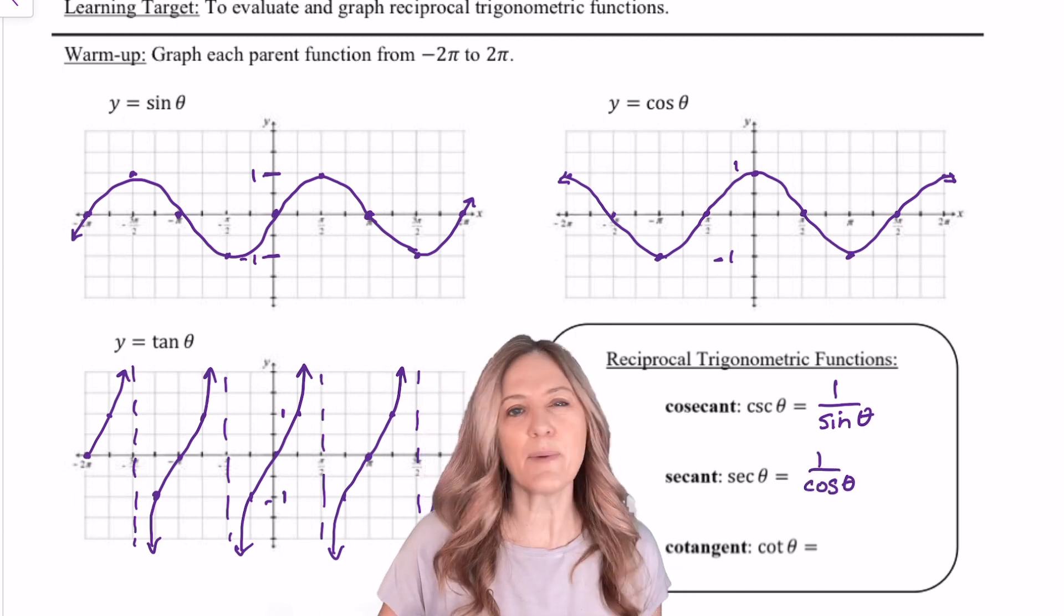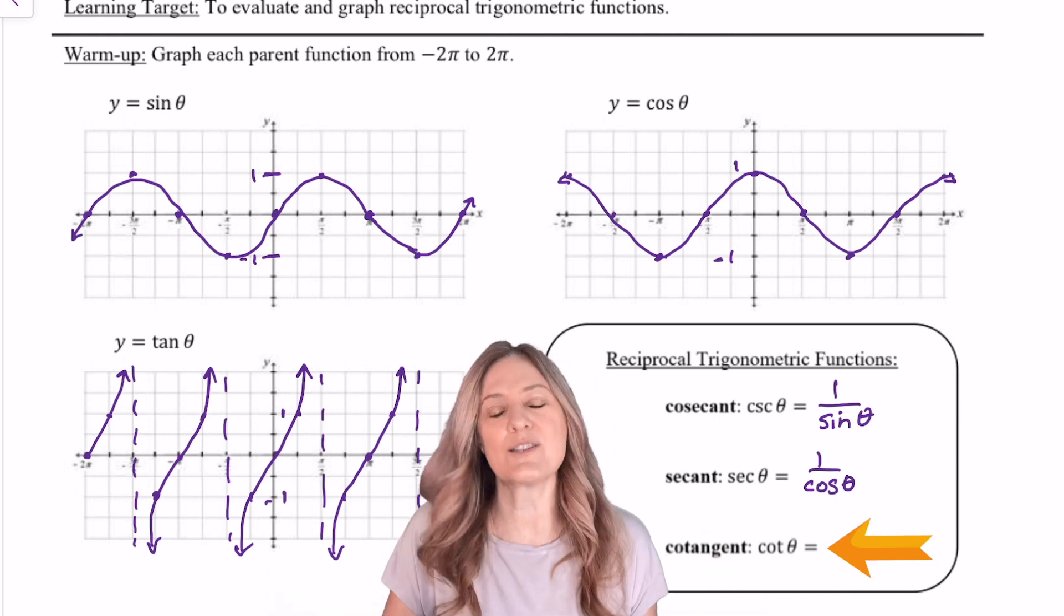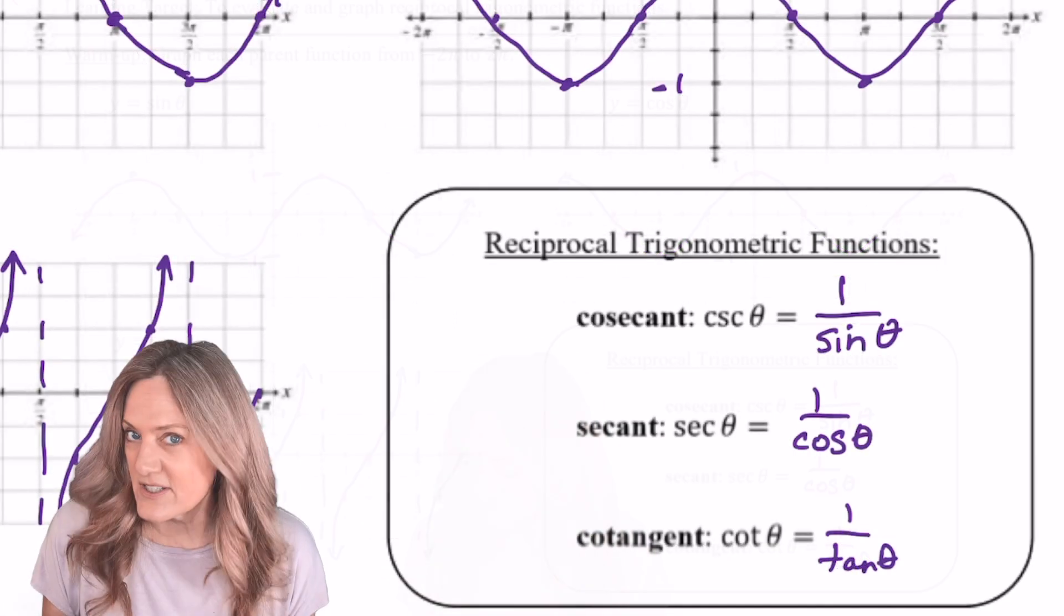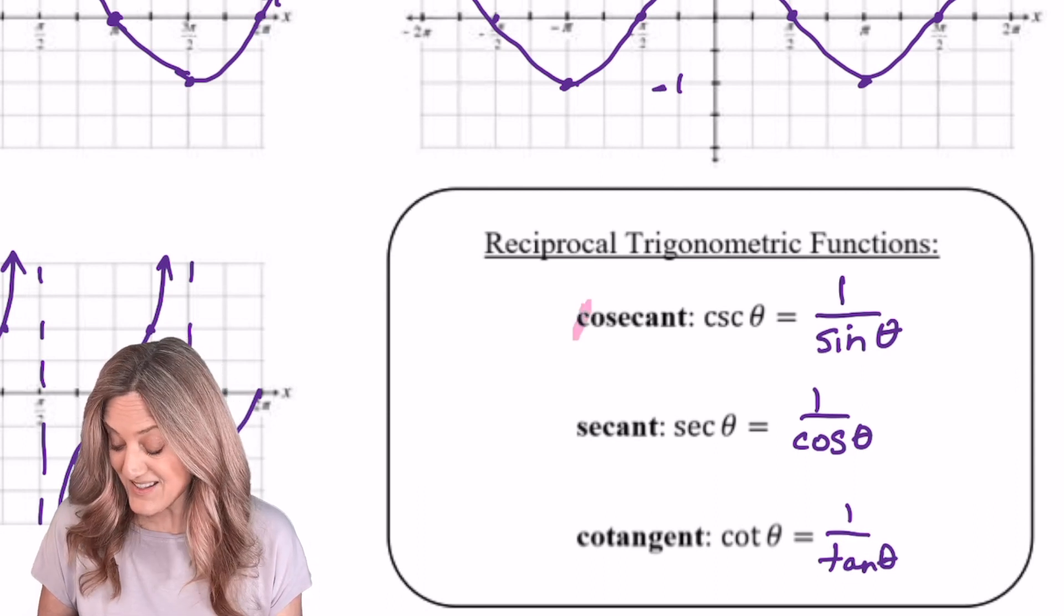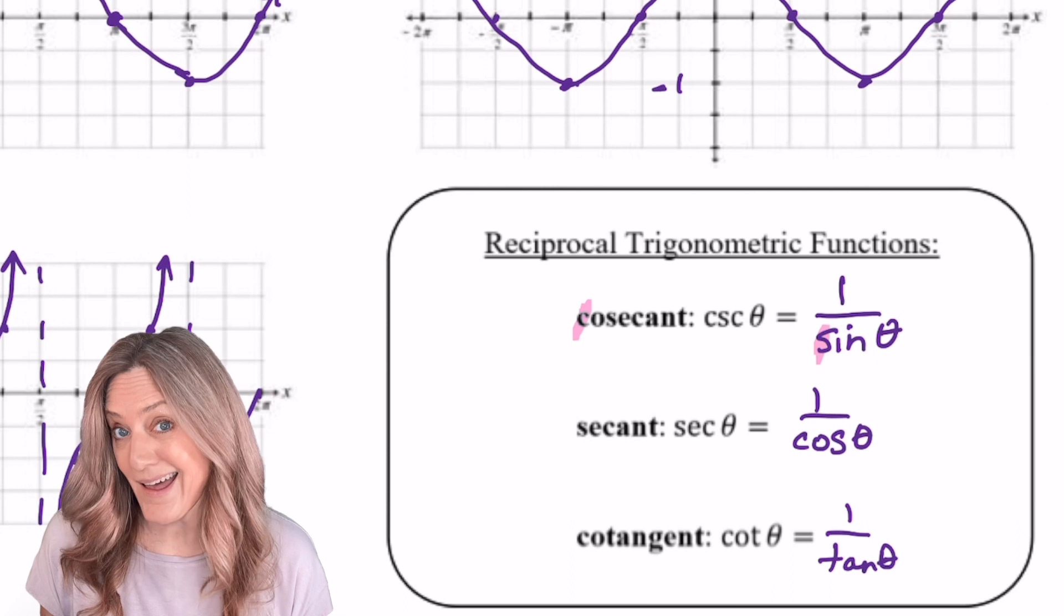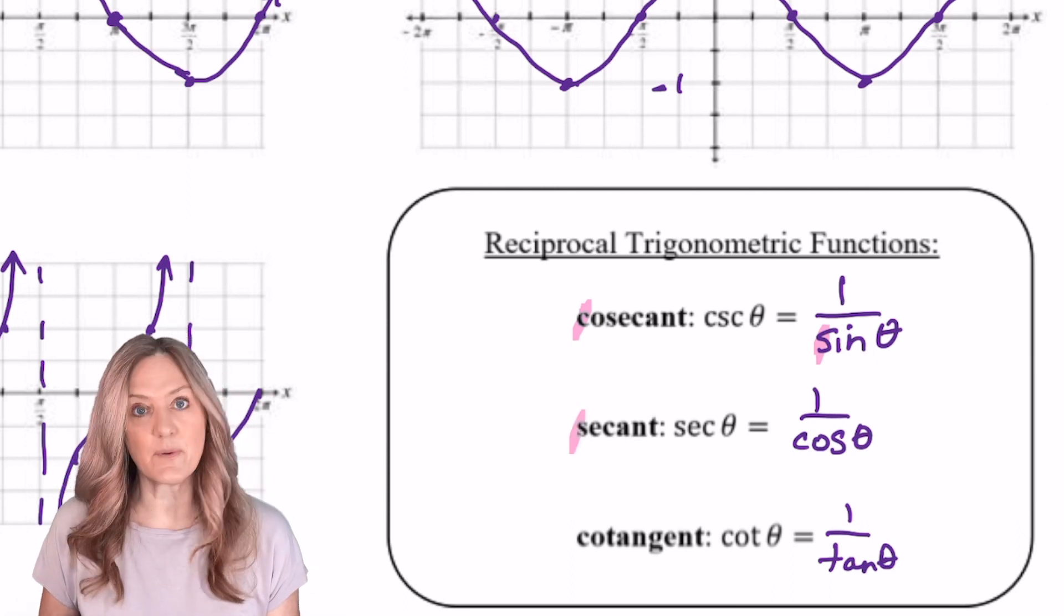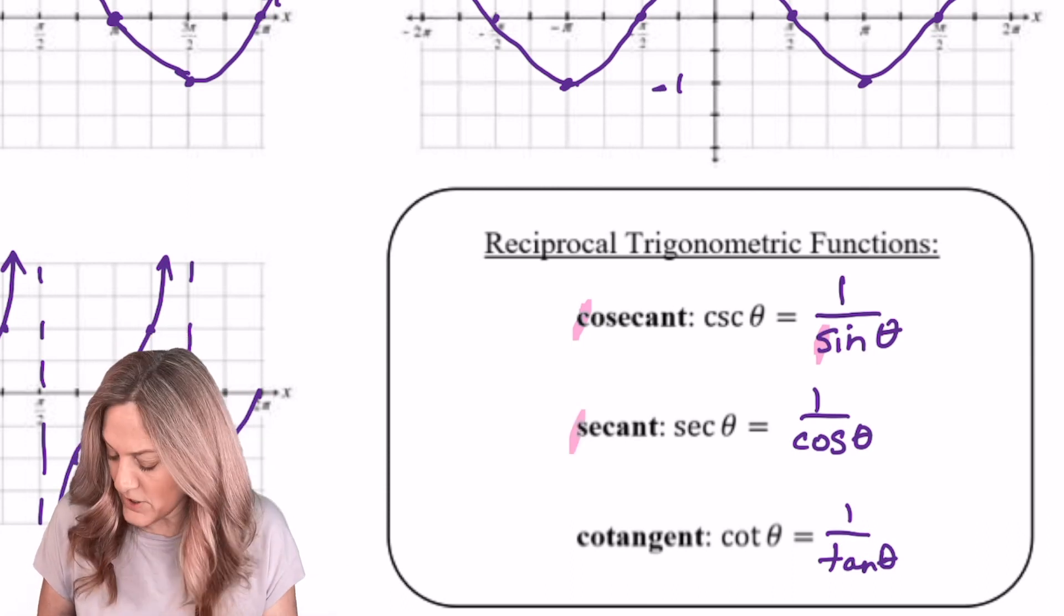And then the one that makes the most sense, cotangent, is the reciprocal of tangent. Just a quick tip. Let's think about this. Cosecant starts with a C, but it is the reciprocal of sine S. Secant starts with an S, but it's the reciprocal of cosine C.